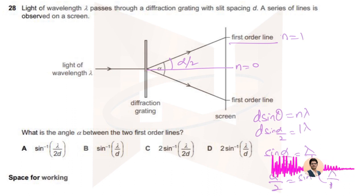And then you take 2 to this side, so 2 times sine inverse lambda by d, the answer is D.